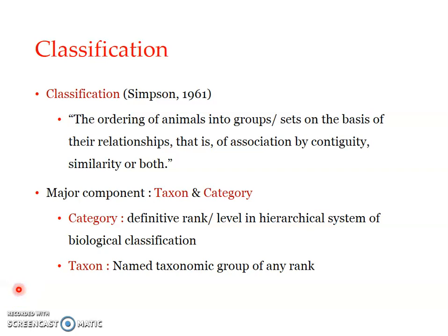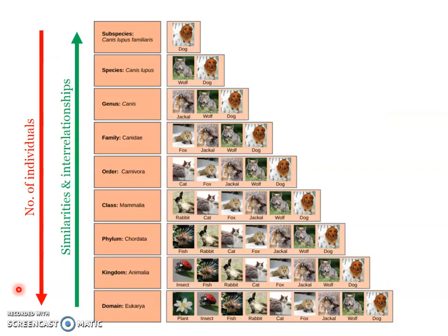Welcome back. Looking into the components of classification, there are two basic components: a category and a taxon. The taxonomy category specifically is a definitive rank in the hierarchical system of biological classification.